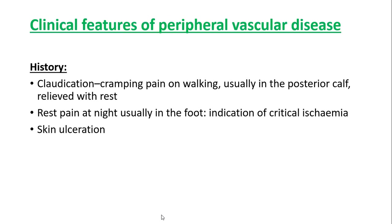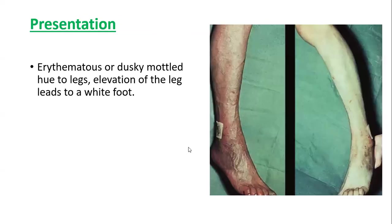Regarding clinical features, the history is important. Ask about cramping pain on walking, called claudication, which occurs in the posterior calf and is relieved by rest. There may be rest pain at night, usually in the foot — this is an indication of critical limb ischemia and would not occur in initial stages. Finally, skin ulcerations which are smaller and punched out, starting from the toes. Presentation can be variable.